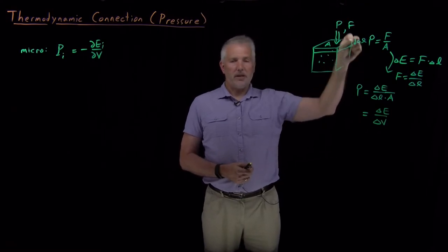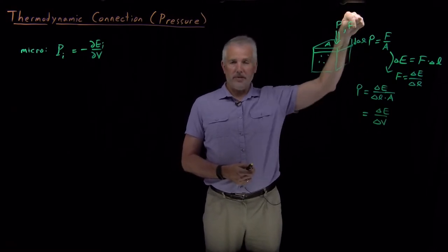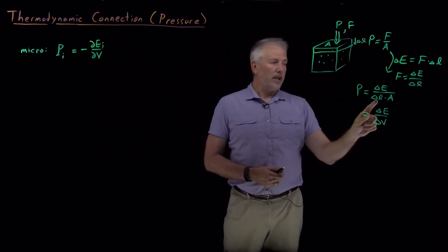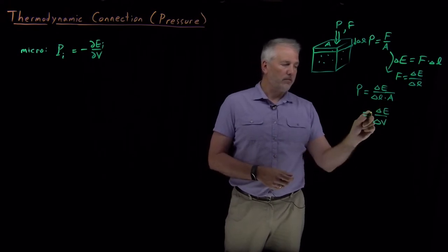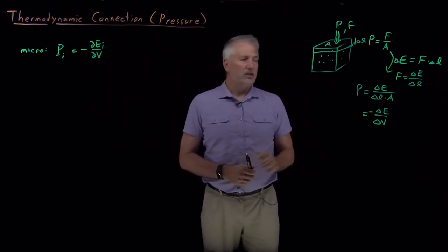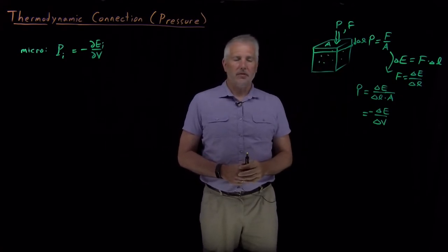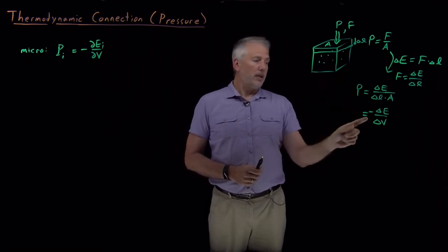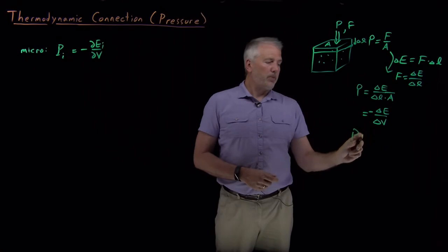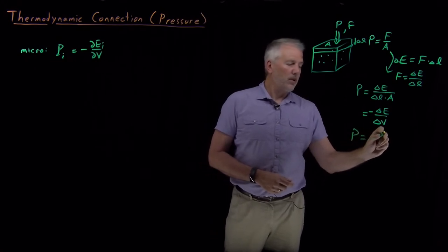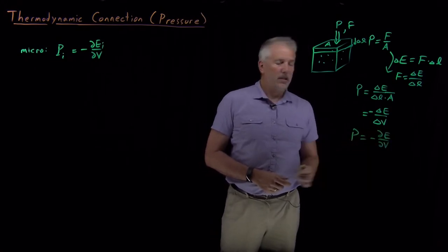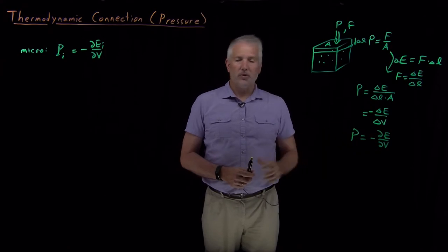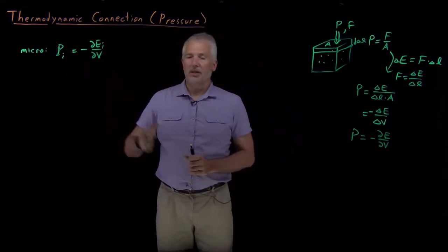Notice the signs: when delta L is a positive number, based on the way the problem is constructed, we've decreased the height of the box, which decreases the volume. So delta L times area equals negative delta V — that's where the negative sign comes in. This is a justification of why this statement makes sense. Pressure is the change in energy per change in volume, or taking the limit of infinitesimally small changes, it's the derivative of energy with respect to volume.